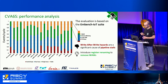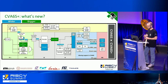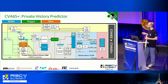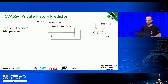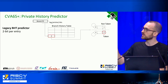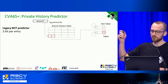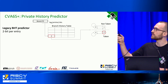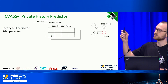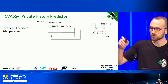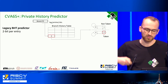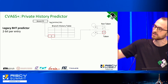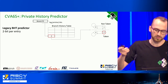Let's delve into the pipeline changes. First, the branch predictor has become a private history branch predictor. The original predictor simply used a slice of bits from the PC to index into a table of saturation counters — a four-state finite state machine where zero or one means not taken and two or three means taken, providing a little inertia when switching between states. Every time we resolve a branch we update the counter by adding or subtracting one.